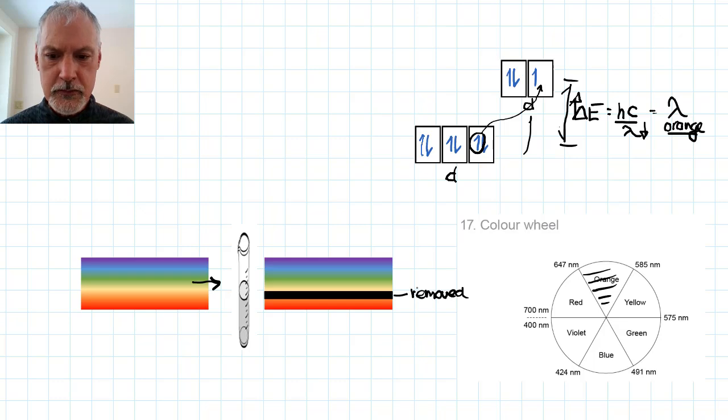With that color removed, what we see then are the remaining parts of the spectrum all blended together, and that would create a blue color, the complementary color to orange.